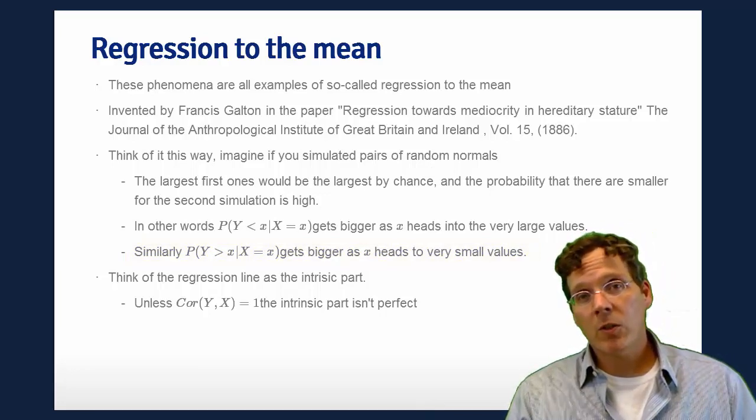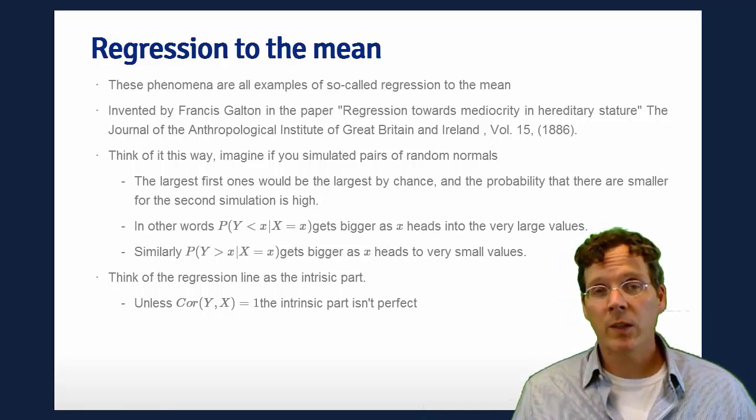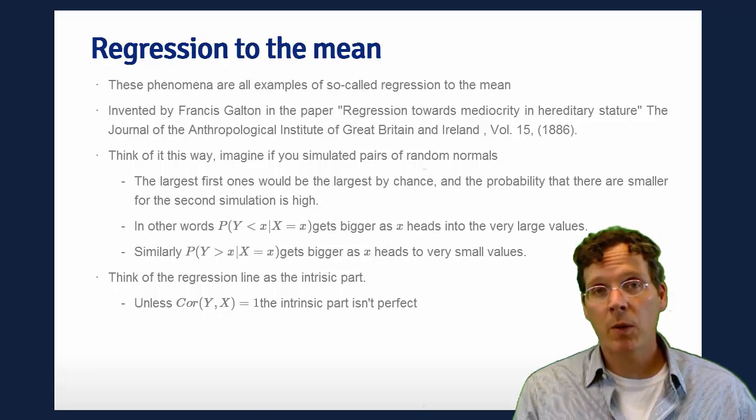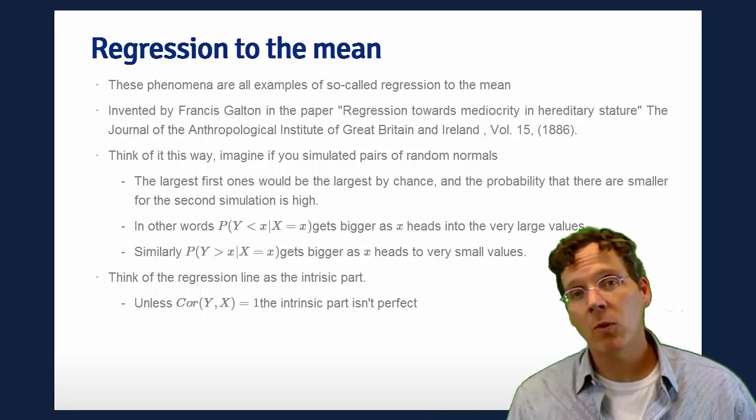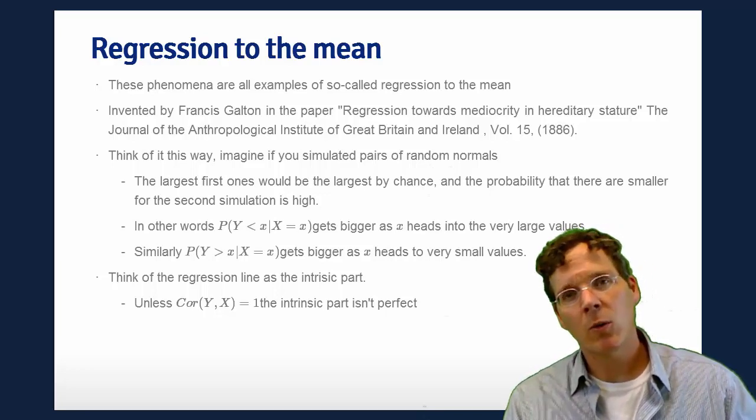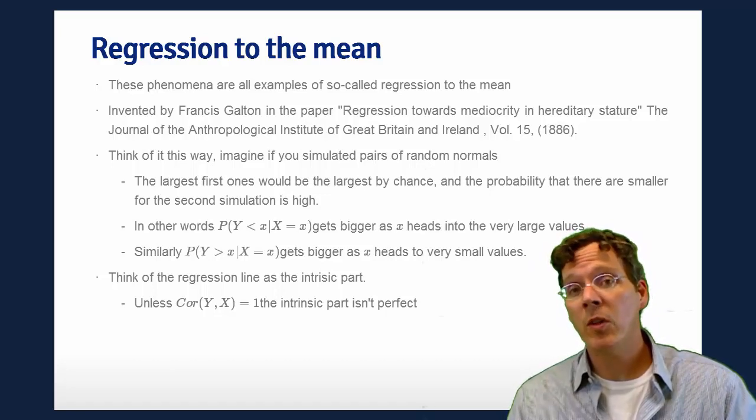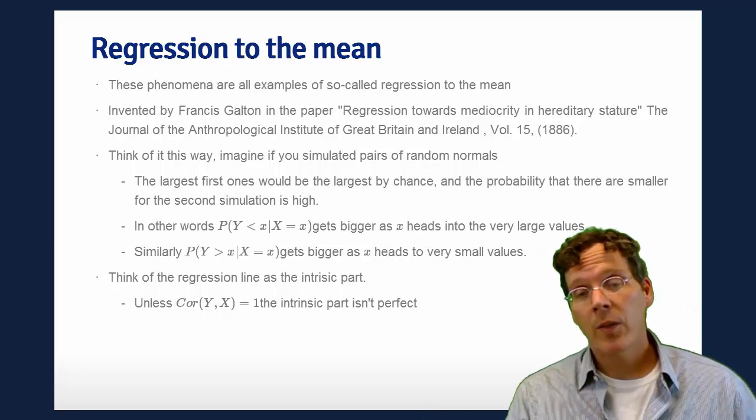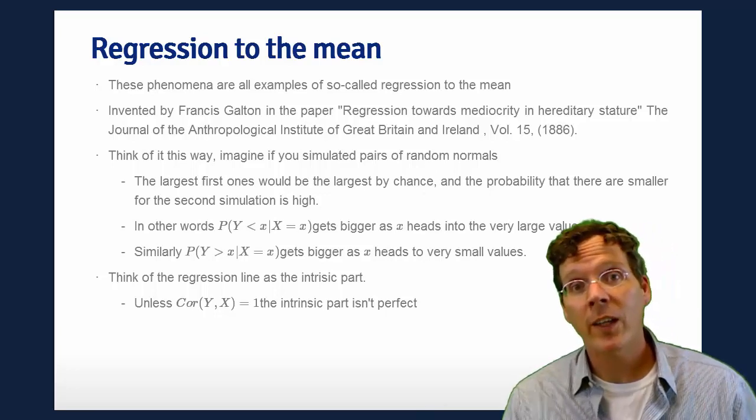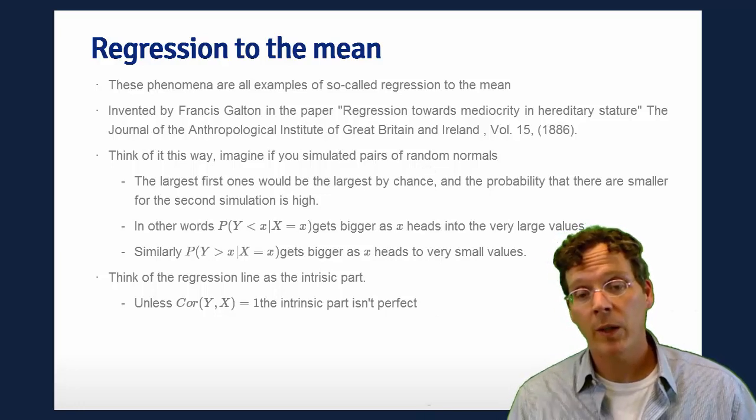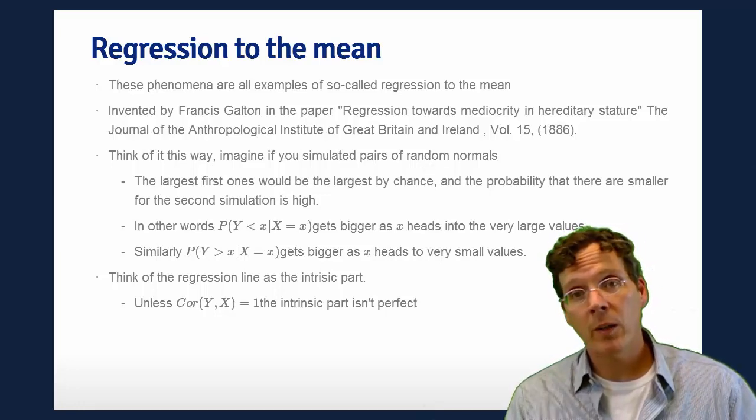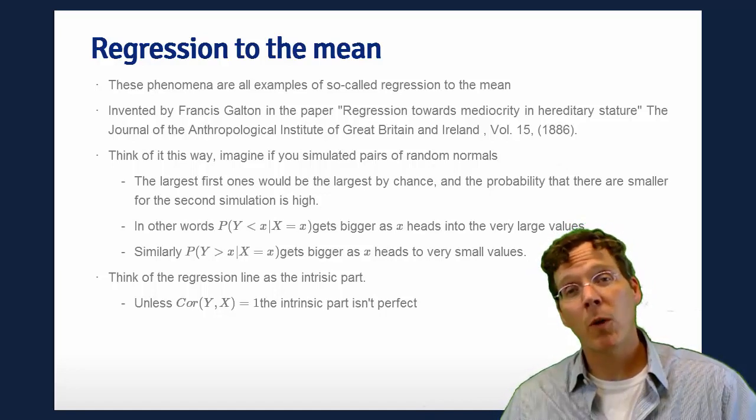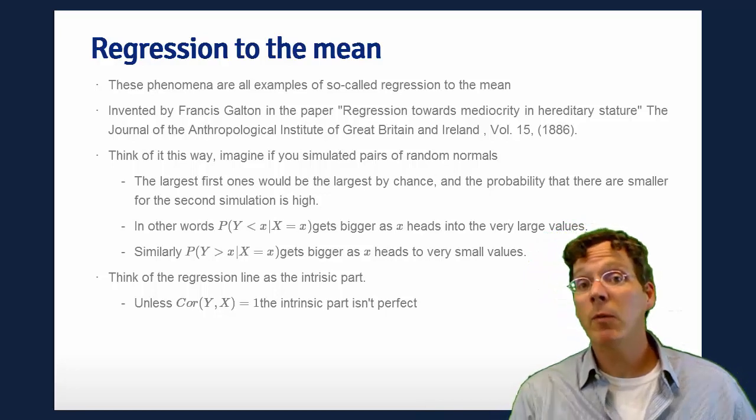This extreme version of regression to the mean where there's 100% regression to the mean is what I like to think about. However, in most cases, there's some blend of some intrinsic component and the noise. Take, for example, if I were to give every student in this class two quizzes, two very hard quizzes. Well, the top performers likely do know the material better. However, quizzes are imperfect instruments. And heaven knows if I gave the quiz, there's going to be a lot of error in that quiz as an instrument. So there's some noise. So the top performer knows the material a little bit better than everyone else, but also may have benefited from some noise. So in the second quiz, they might perform a little bit worse, probably still well, but a little bit worse. The same thing for the worst performers.